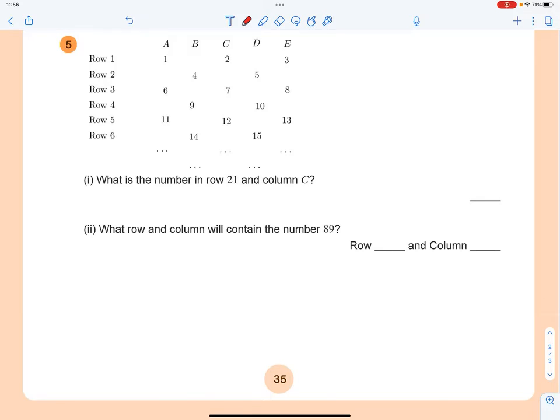Homework question number 5 in lesson 4. We got this number table. The first question is: what is the number in row 21 and column C?